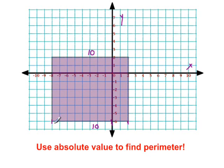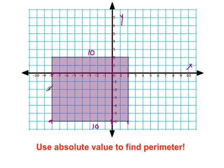Let's calculate our height. From here to here, let's look over at the y-axis. From negative six to zero, the absolute value would be six, so from here to here is six. And of course, from here to here would be the absolute value of two, which is two. So six plus two is eight — our height would be eight. And then to calculate the perimeter, we just add 10, 10, 8, and 8.